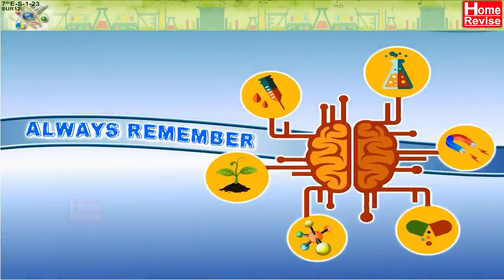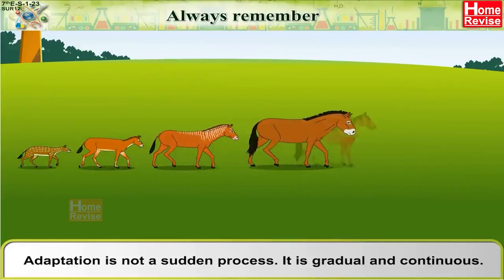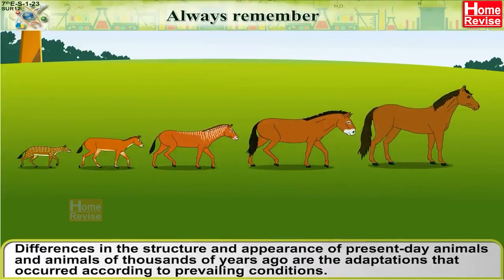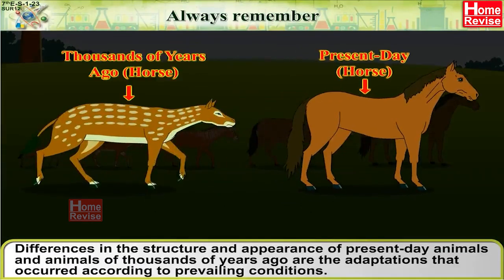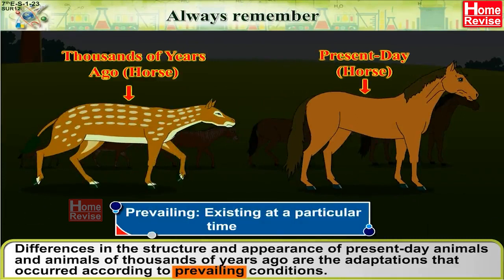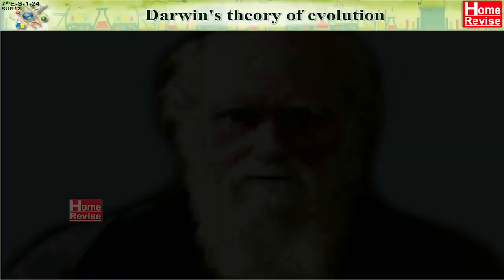Always remember: Adaptation is not a sudden process. It is gradual and continuous. Differences in the structure and appearance of present-day animals and animals of thousands of years ago are the adaptations that occurred according to prevailing conditions. It is our duty to conserve this diversity.